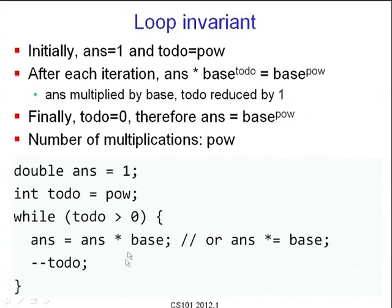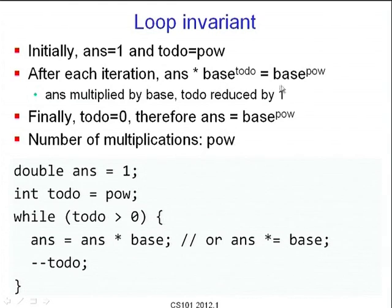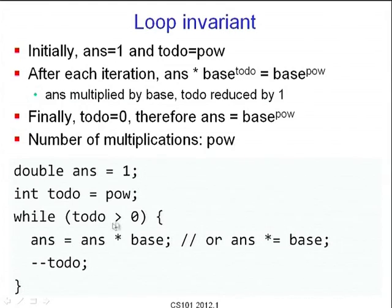The invariant is: 'answer * base^todo = base^pow'. Initially answer is 1 and todo equals pow, so the condition clearly holds. Every iteration todo decreases by 1 but answer is multiplied once by base — the expression remains true. Finally todo becomes 0, so base^todo becomes 1, meaning answer must equal base^pow. The number of multiplications is exactly pow.